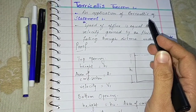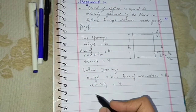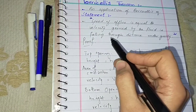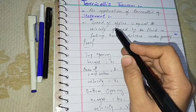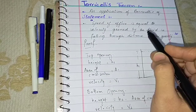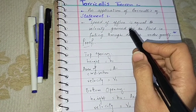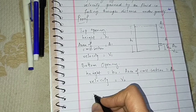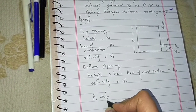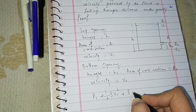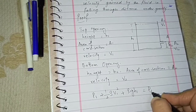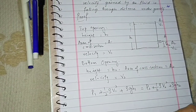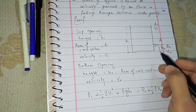Since this is an application of Bernoulli's equation, we apply Bernoulli's equation here. The equation gives us: P1 plus half rho V1 squared plus rho g H1 is equal to P2 plus half rho V2 squared plus rho g H2. We will see the result of applying this relation.